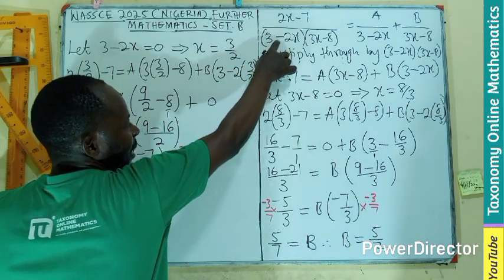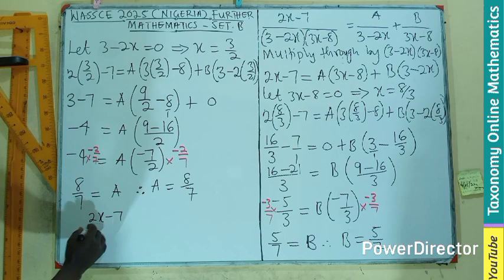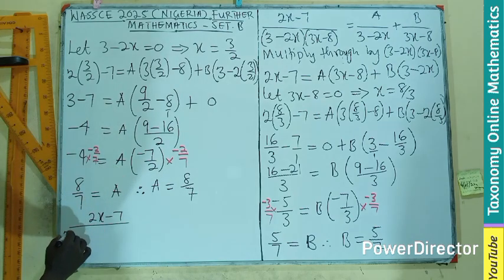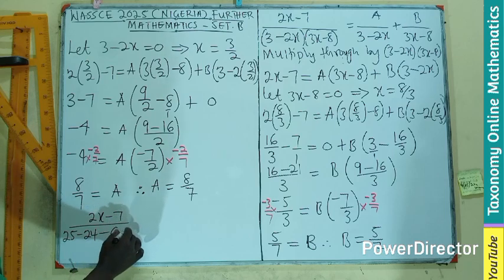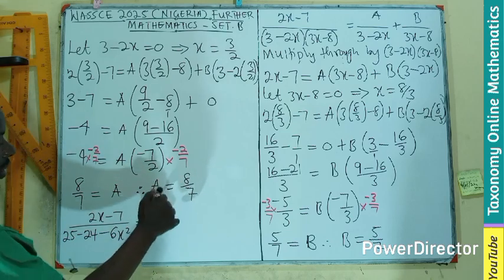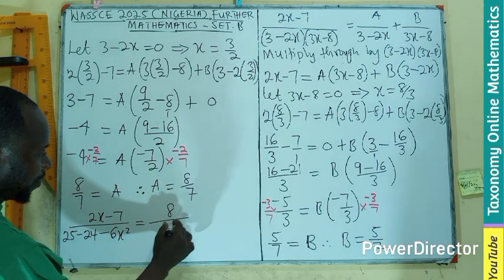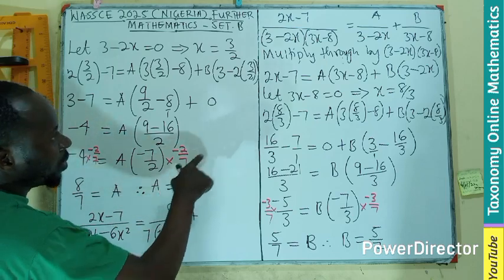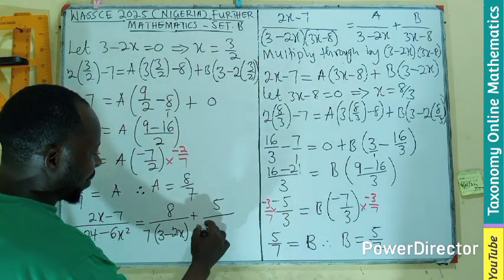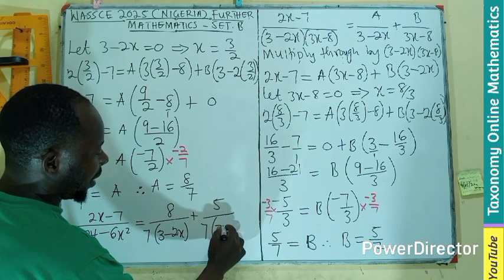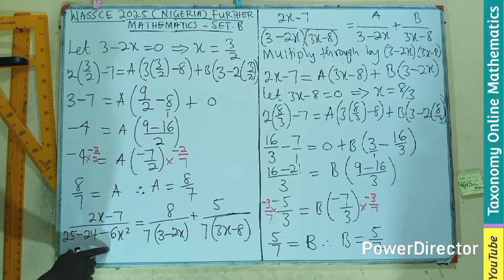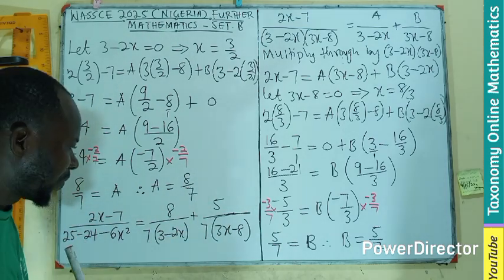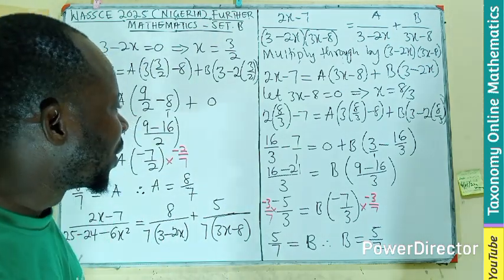Your fraction, this, is now going to be equals to 2X minus 7 divided by 25x minus 24 minus 6X squared. It will be equals to A, which is 8 divided by 7 multiplying 3 minus 2X, plus B, which is 5 divided by 7 multiplying 3X minus 8. Now, the fraction is resolved into two partial fractions. I guess you will follow through step-by-step approach that we passed. I know in resolving to get the value eliminating A and B, there are various ways that can be done.